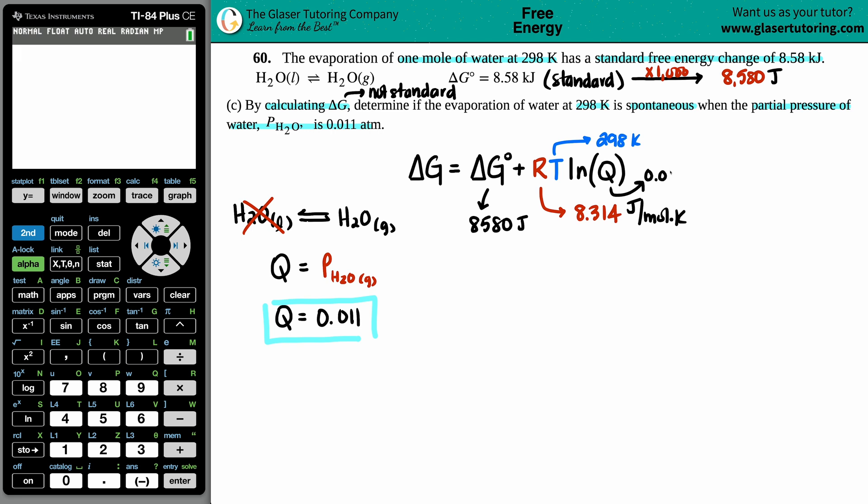So now let's just plug it all in. ΔG not standard equals the standard value 8580 plus the ln of 0.011, and then I have my R value of 8.314, and I have my temperature value of 298. And the great thing about the TI-84 or TI-83 or any TI, you could just plug this all in at one single shot and the calculator will understand what we're trying to do. So let's get it done.